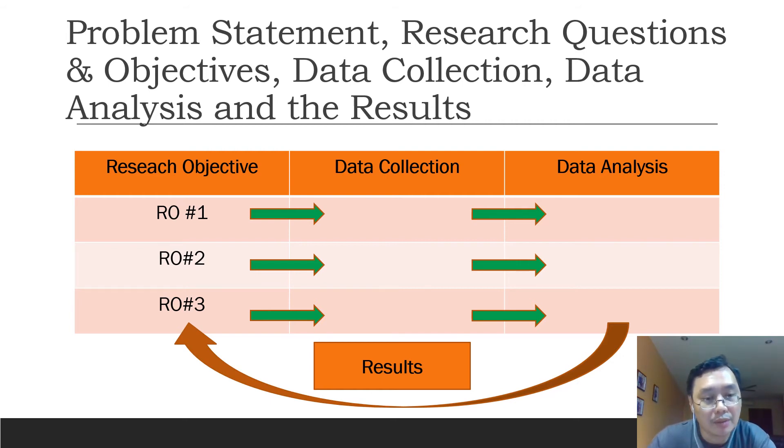The common problems that I encounter with some masters or PhD students is that they have no idea or maybe they were not clear about the whole process here. They might have formulated some research objectives, but when they come to think about it, they have no idea how to collect data. What kind of data is needed in order to answer their research objectives? And one of the common issues is the research objective is too broad and too general.